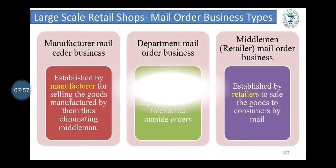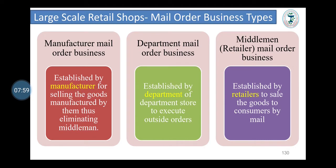Types of mail order business: Manufacturer mail order business, established by manufacturers for selling goods manufactured by them, thus eliminating the middleman. Departmental mail order business, established by a department of a departmental store to execute outside orders. And retailer mail order business, established by retailers to sell goods to consumers by mail.